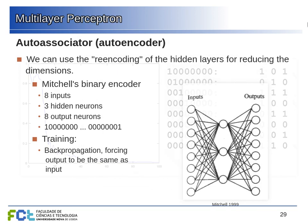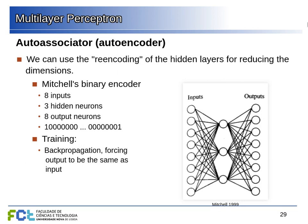Another thing we can do with neural networks is the auto-encoder — called an auto-associator in Mitchell's era and now part of a large group of neural network architectures. This is an example of unsupervised learning: instead of having labels, we feed the network inputs and want it to output the same thing it received. Mitchell's example uses eight inputs where exactly one is one and the rest are zero.